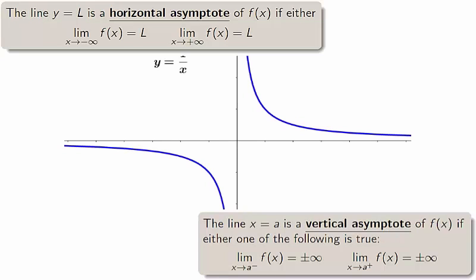Functions can have any number of vertical asymptotes, but either 0, 1, or 2 horizontal asymptotes.